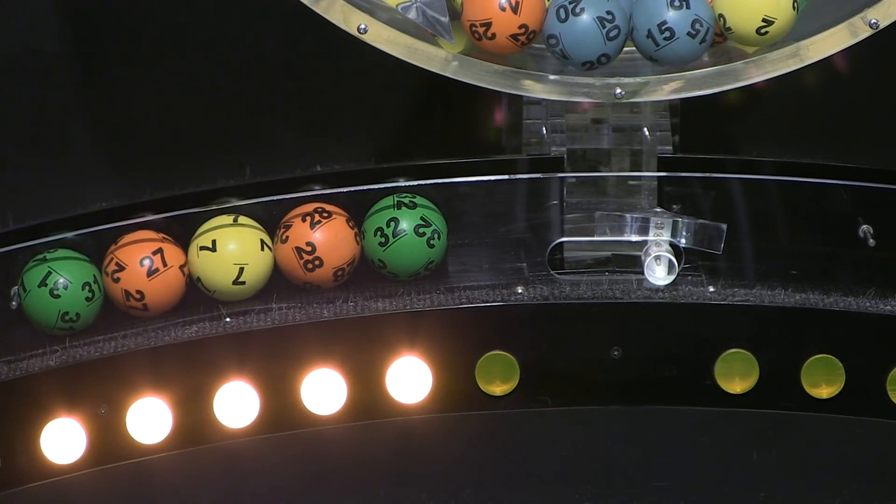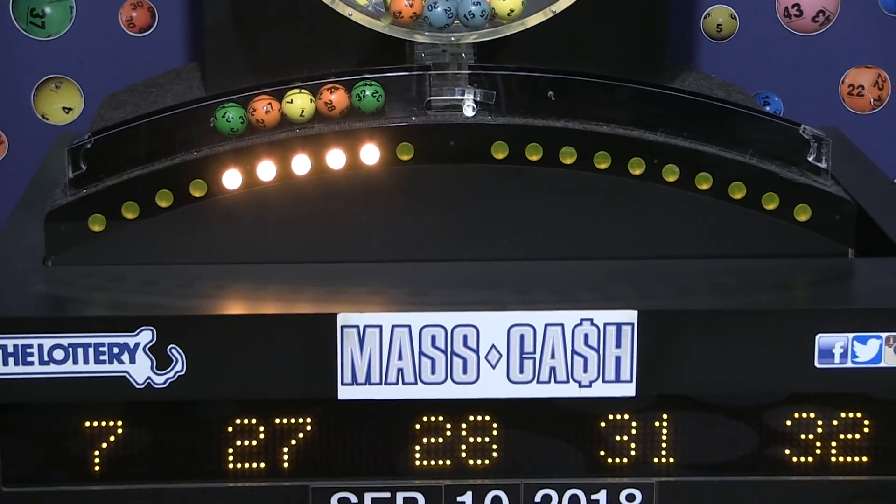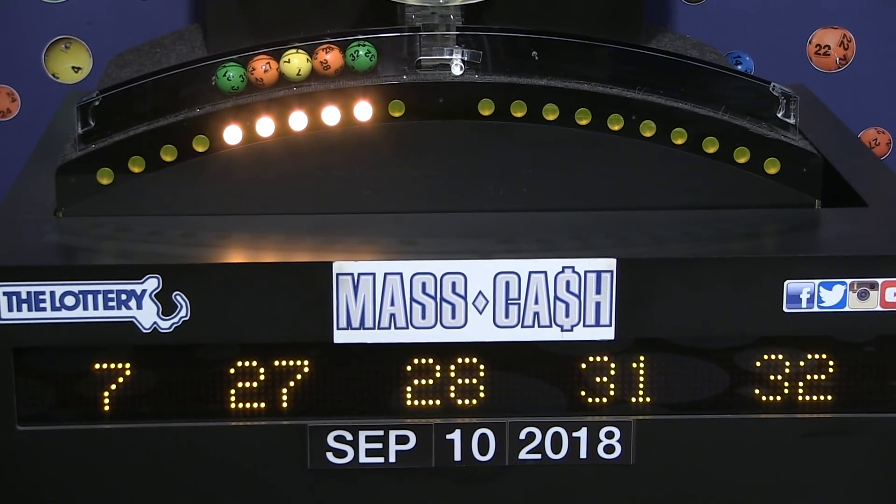Once again, the winning Mass Cash numbers for Monday, September 10th are 7, 27, 28, 31, and 32. We'll see you tomorrow for all the Massachusetts State Lottery's drawings. Good night.